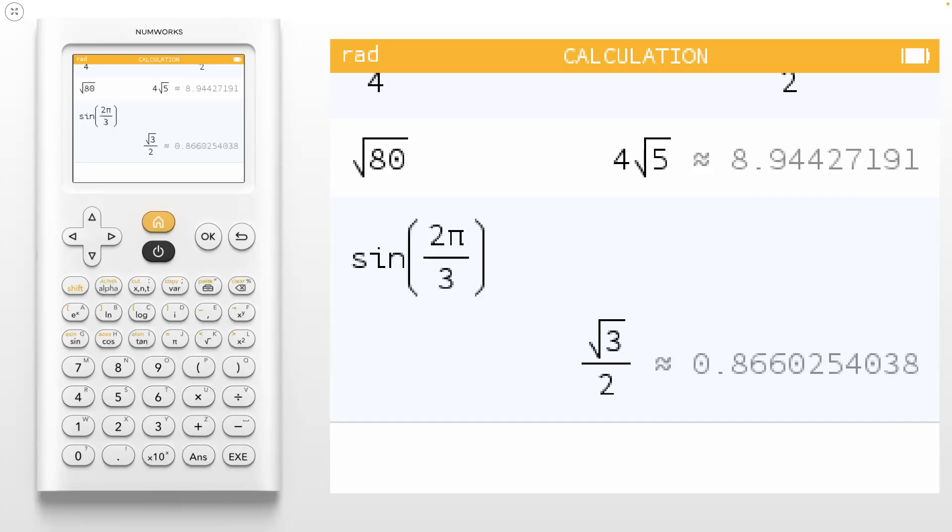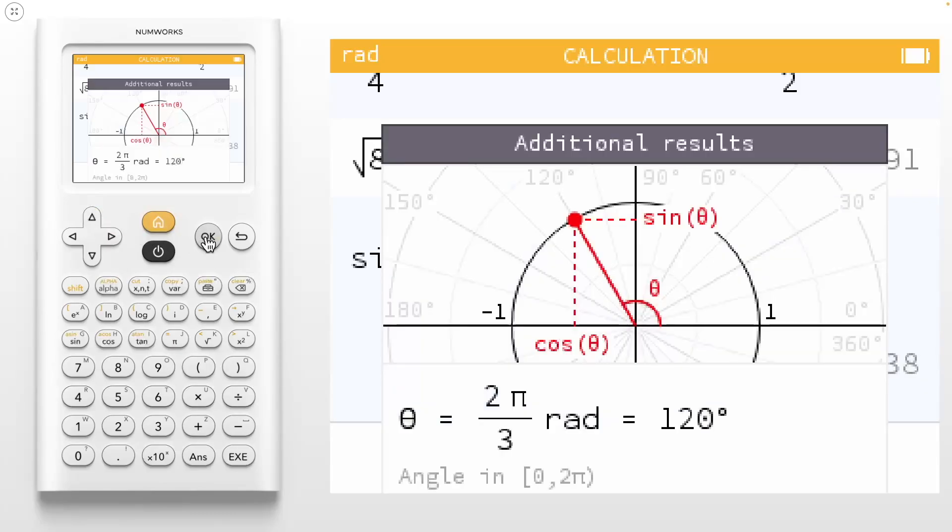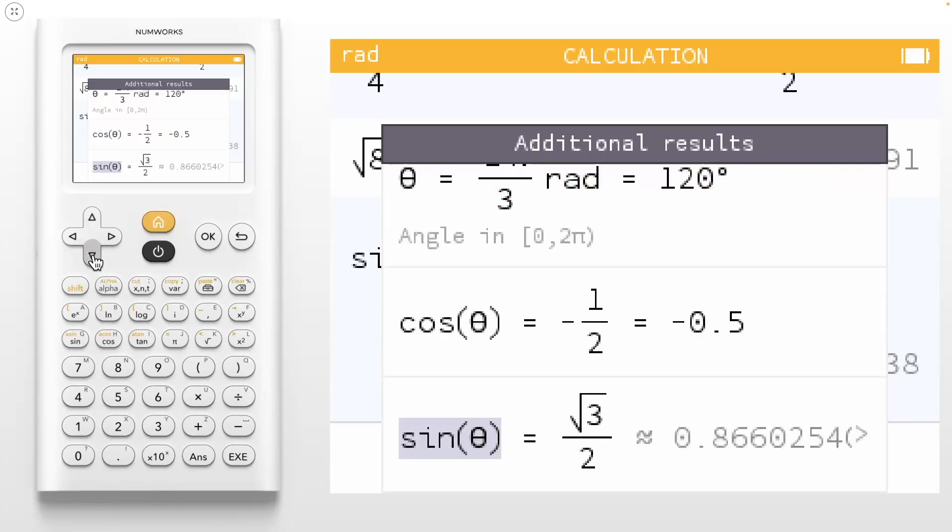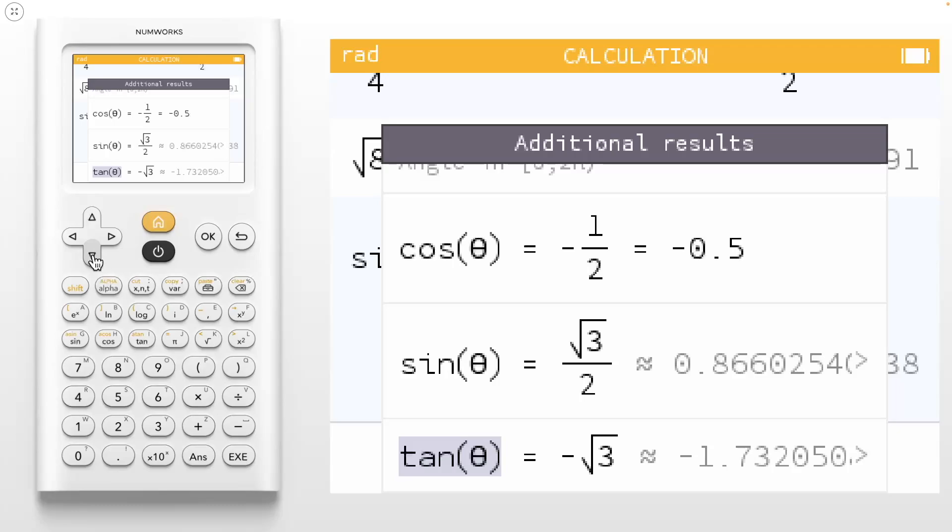We can actually obtain additional results to this computation. If we navigate up into the calculator history, you'll notice three dots at the end of the line. This opens up our additional results, that is, other relevant values for our calculation. Calculations involving trig will include a graph of the unit circle, the angle in radians and degrees, and also the cosine, sine, and tangent values for that angle when you scroll down. Using the back key, we return to the calculator editor.